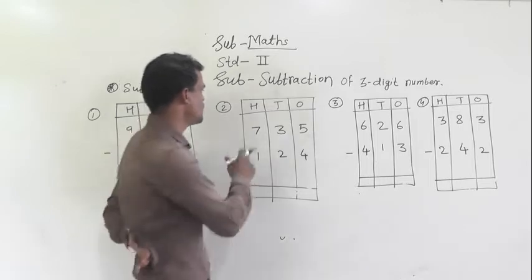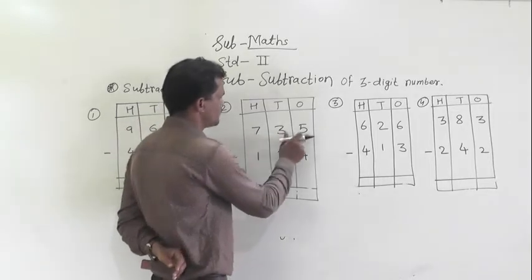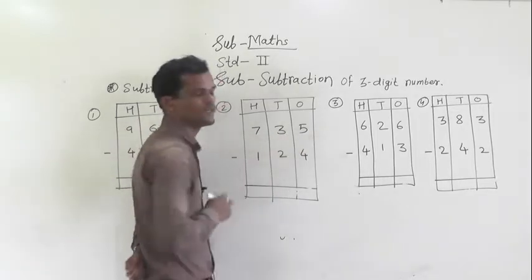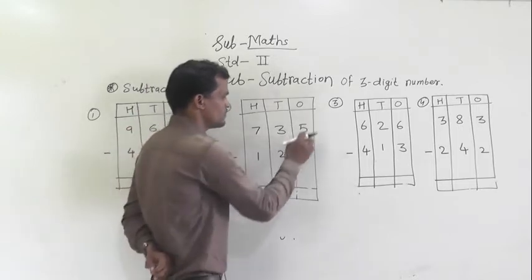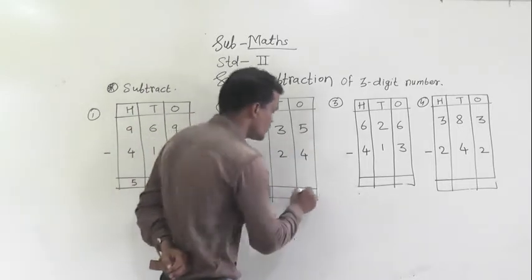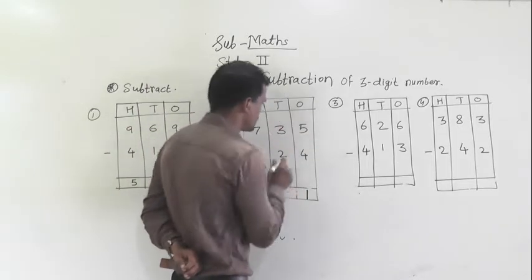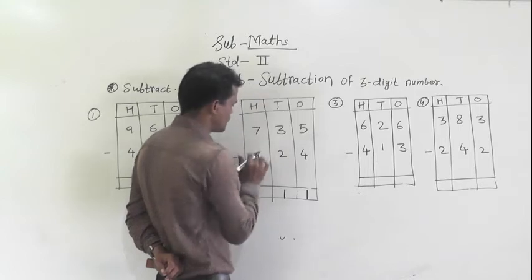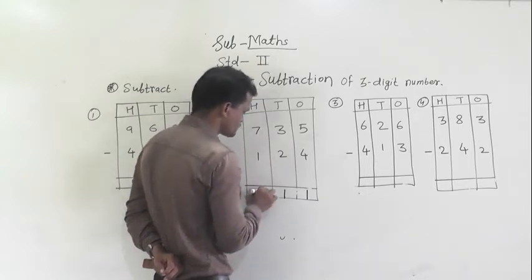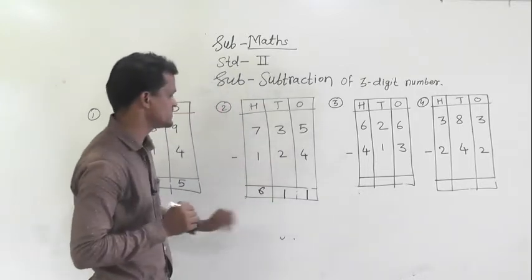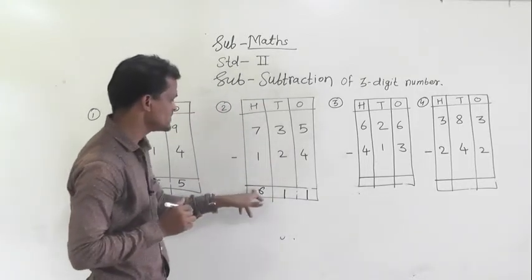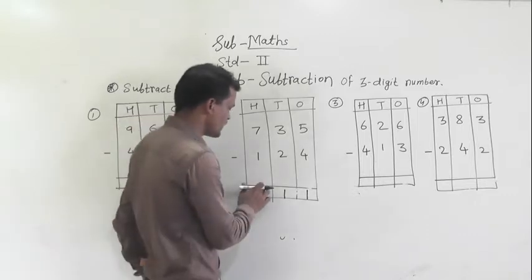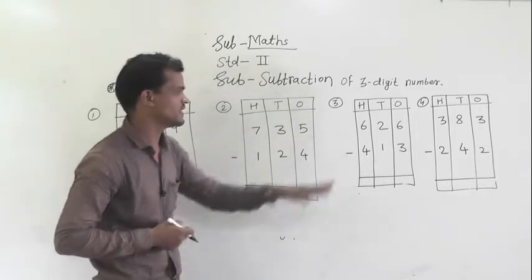Next example: 735 minus 124. So, 5 minus 4 is 1, 3 minus 2 is 1, 7 minus 1 is 6. So what is the answer? 611 is the answer.